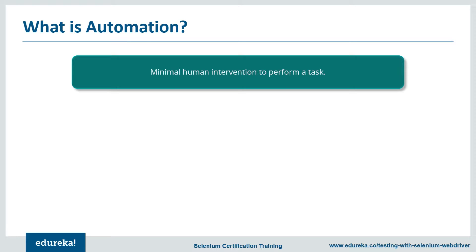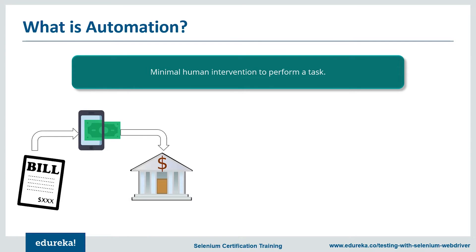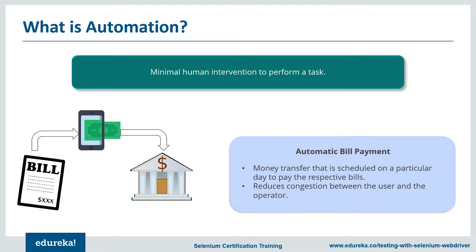Consider this example: suppose you want to pay a bill and the due date is very near, but you cannot physically go there to pay it. Every time you want to make a transaction, you need to add details so the system acknowledges it's a genuine user. Technology has improvised so much that there is an option called automatic bill payment, where the amount is directly deducted from the account on a date the user picks each month.